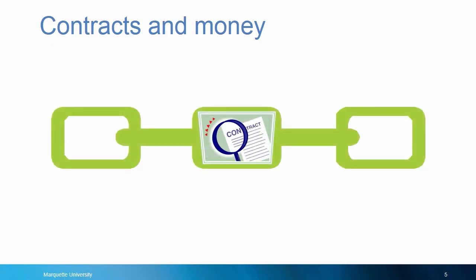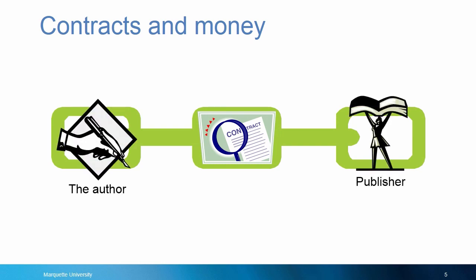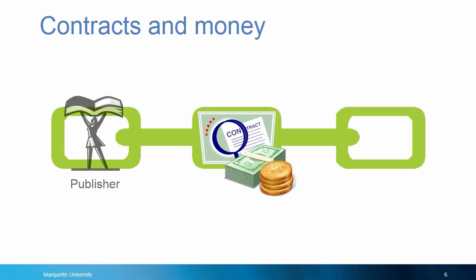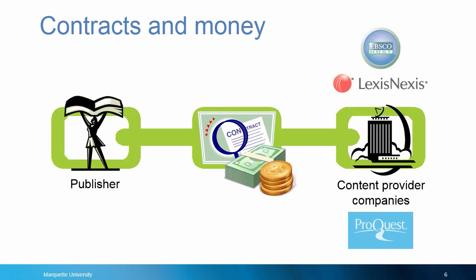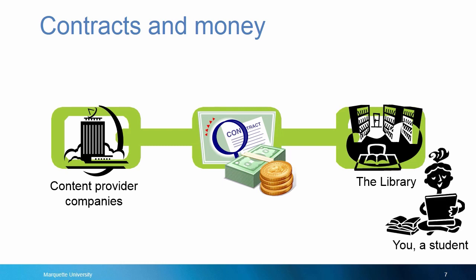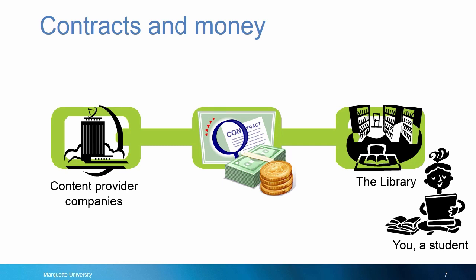Second, what links all these people and organizations? Contracts and money. An author signs a license agreement or contract with the publisher. The publisher contracts with the content provider. The content provider contracts with libraries, and libraries have implicit contracts with their users as either students of a university or residents of a city or town.